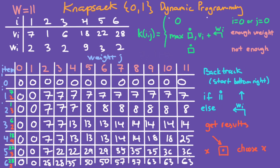Now let's backtrack. The number in the bottom-right represents the maximum value we can obtain from all items. We start there. If the number above is equal to the current number, we just move upward. If it's not equal, we move up then move left wi times. Here the number above is not the same, and the item weight is 2, so we move up then left two times. Now at the new position, the number above is not equal, and the item weight is 3, so we move up then left three times.